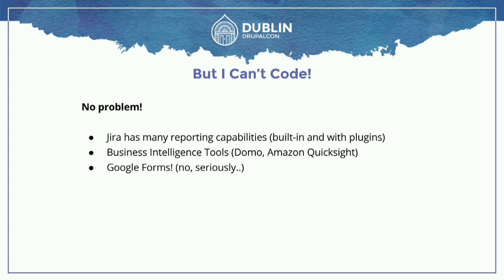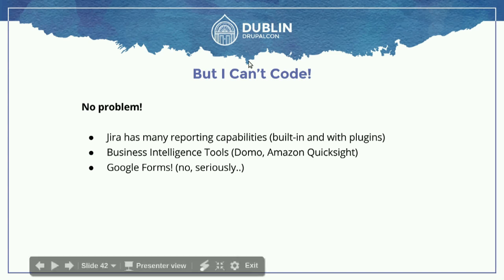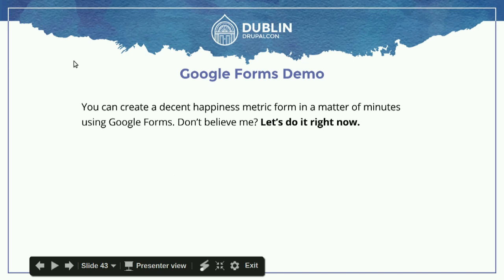If you're using Jira, there are lots of reporting capabilities built in — documentation and plugins. You can do things from within Jira if you have to. There are also some business intelligence tools — we use Domo, where we actually feed our Jira data in and do some analytics. There's also Amazon QuickSight, which they released last year, if you want to use their service for business intelligence. And then again, there's Google Forms — and I'm serious, this is actually really useful. Let me show you.